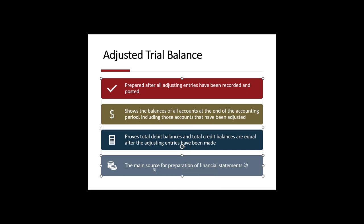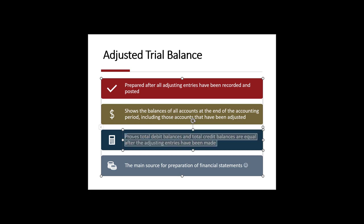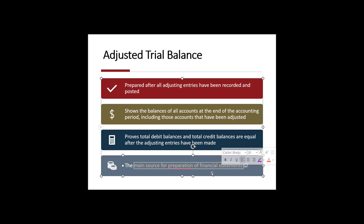It's only after you've prepared your income statement, changes in equity statement, and your balance sheet that you can ask: have I captured all of these adjusting journal entries? Sometimes it's an iterative process — a balance doesn't look right, maybe you missed a general journal entry, an adjusting entry, or had debits and credits reversed. Even though it balanced in the adjusted trial balance, it didn't reflect economic reality once reviewed in your financial statements.